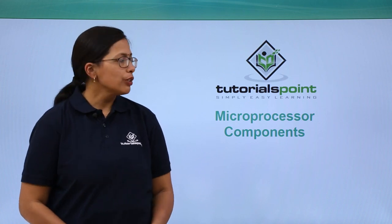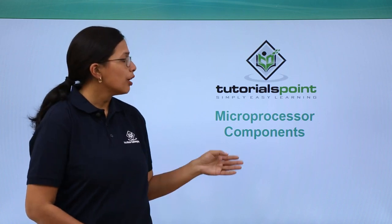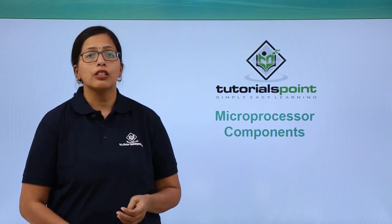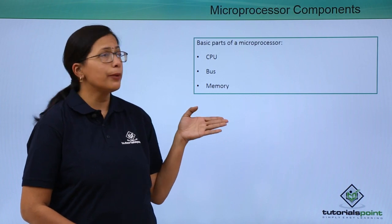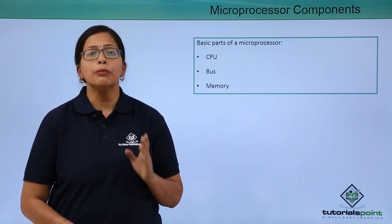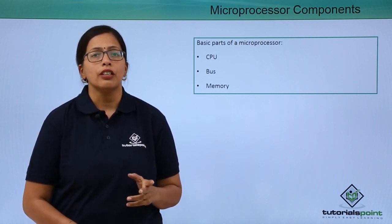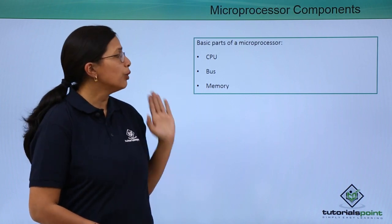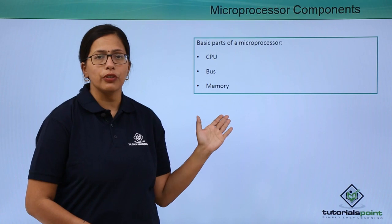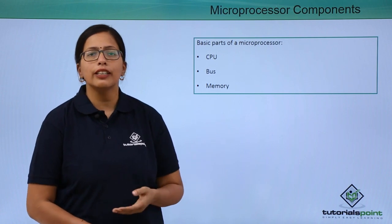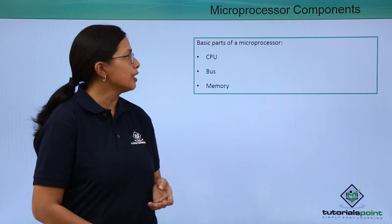In this video, we are going to discuss microprocessor components. There are three basic parts of a microprocessor: the CPU, the bus, and the memory. Let's look at them in more detail.